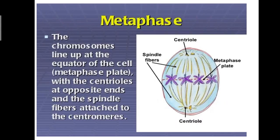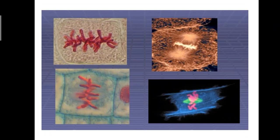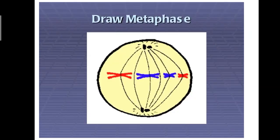Metaphase: the chromosomes line up at the equator of the cell with the centrioles at opposite ends and the spindle fibers attached to the centromere. These are the various structures, this is the onion cell. Draw the metaphase, draw the diagram of metaphase in your notebook.